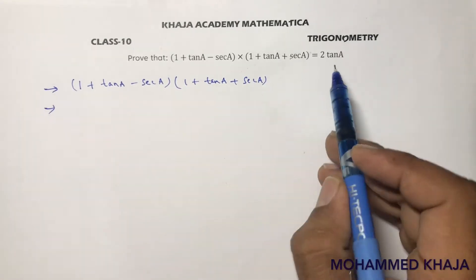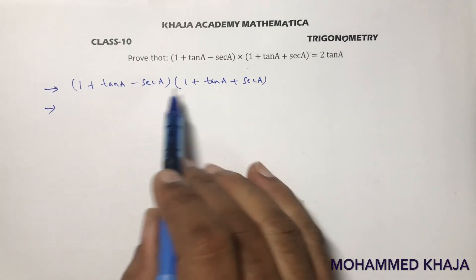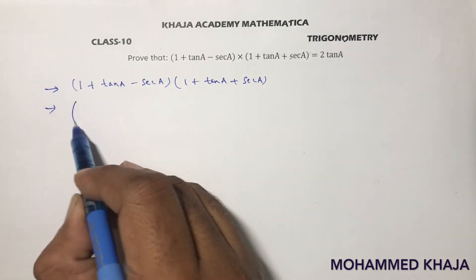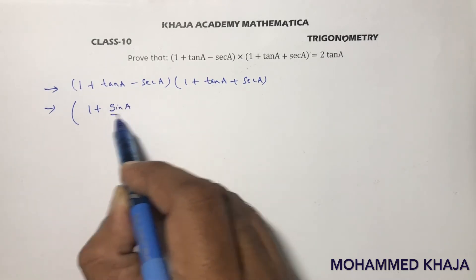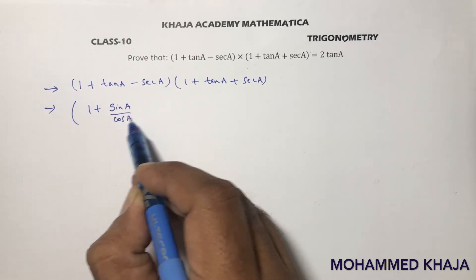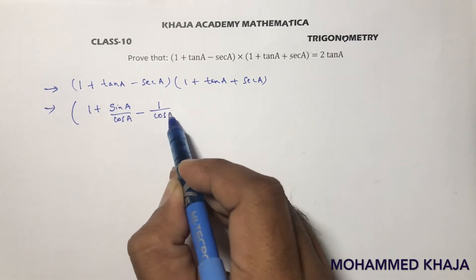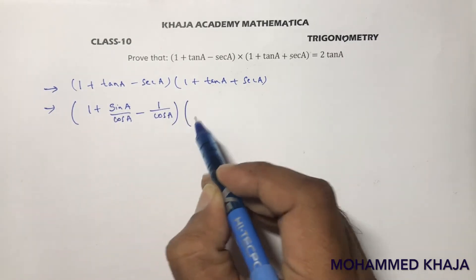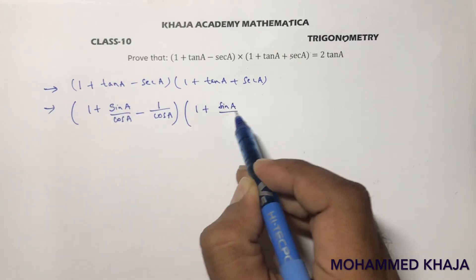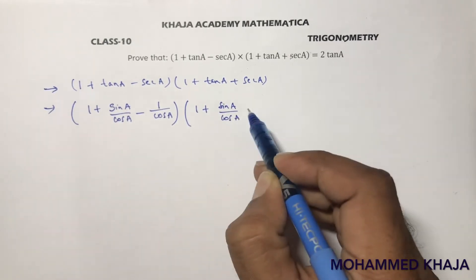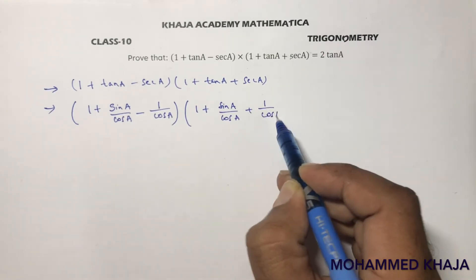We need the answer in terms of tan a, so we will change all the ratios in terms of sin and cos. So 1 + tan a can be written as 1 + sin a / cos a, and sec a can be written as 1 / cos a.